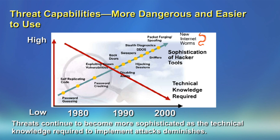Regarding threat capabilities, threats are becoming more dangerous and easier to use. As the internet opens up and sophisticated attack tools become freely downloadable, threats are increasing day by day while technical knowledge is decreasing. Technology changes so rapidly that by the time you learn one technology, another comes up, and by the time you learn that, new attack methods are already developed. Attacks are growing faster than the technology, and knowledge is not keeping up because technology is increasing at such a high pace.